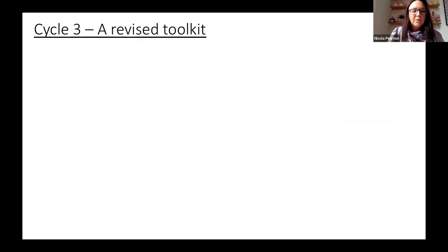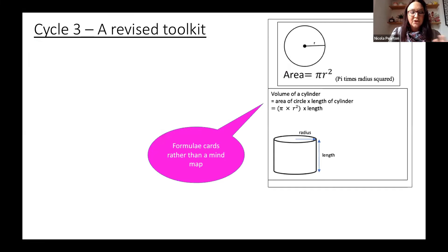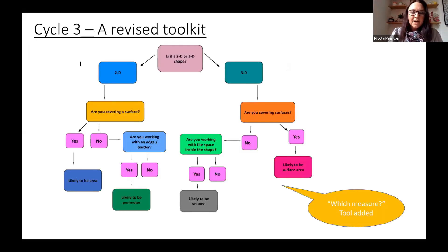Based on that, we revised the toolkit slightly. We put which measure first, then got them to write down the formula, and then the same steps as before. I also thought the previous crib sheet was a bit too busy for students, so we made four mini cards rather than a mind map. Then this tool is sort of a flow chart to help students see which measure they're likely to be using.